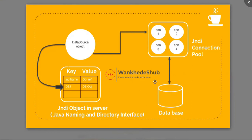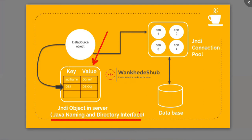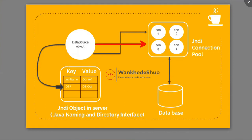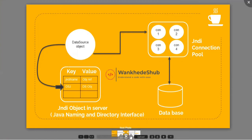We have seen this diagram in my previous video, so I'm going to describe it so you can understand how the connection pool works. The main thing we need in the connection pool is your DataSource object. The DataSource object acts as an entry point for your connection pool. We create the DataSource object and put it into the JNDI registry. JNDI stands for Java Naming and Directory Interface — it provides global visibility for your DataSource object. The DataSource then acts as an entry point for your connection pool, and each connection in the pool has connectivity with your database to perform CRUD operations.